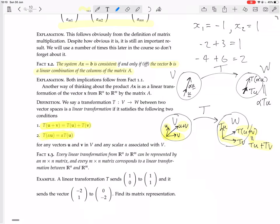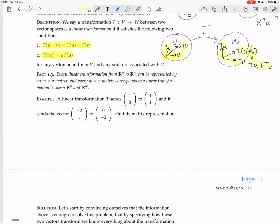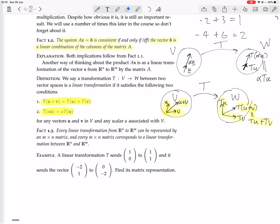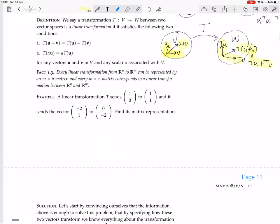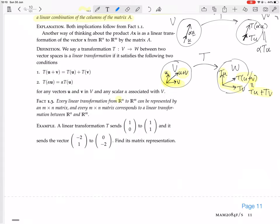Okay, now here's a really important thing. Every linear transformation from Rn to Rm can be represented by an n-by-m matrix, and every n-by-m matrix corresponds to a linear transformation between Rn and Rm. So I've just talked abstractly about linear transformations as being things that satisfy these two conditions. But now we have something concrete, that at least in the case where your vector spaces are Rn and Rm, the linear transformation can be thought of as a matrix.